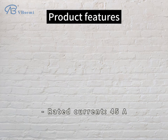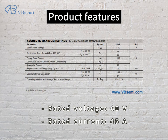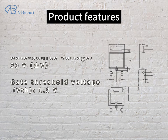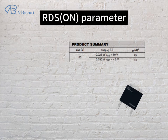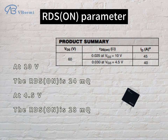Product features: rated voltage 60V, rated current 45A, gate-source voltage 20V, gate threshold voltage VTH 1.8V. RDS-ON parameter: at VGS=10V, the RDS-ON is 24mΩ; at VGS=4.5V, the RDS-ON is 28mΩ.